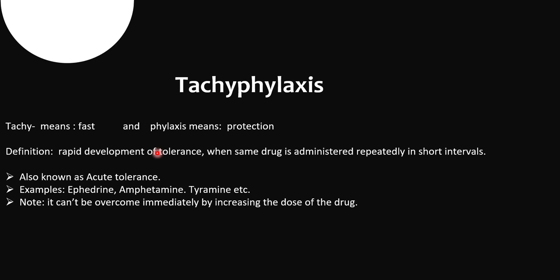Jaise ki maine aapko bataya tha ki drug tolerance mein rapid development nahi hua tha — bahut jaldi hamari body us drug ke liye tolerate nahi hoti, kaafi time lagta hai. But in case of tachyphylaxis, woh within shorter duration of time mein hi drug tolerate ho jaati hai — rapid development of tolerance when the same drug is administered repeatedly in short intervals. Examples of tachyphylaxis are ephedrine, amphetamine, and tyramine.